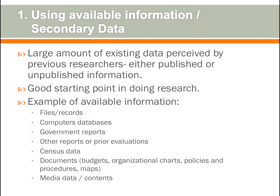Using available information or secondary data is one technique of data collection in which there are large amounts of existing data gathered by previous researchers, either published or unpublished. It is a good starting point for young researchers. Examples of available information include files or records, computer databases, government reports, prior evaluation reports, census data, budget documents, organizational charts, policies, procedures, maps, and media contents.